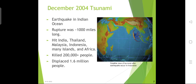Due to the Indian Ocean, energy was transferred laterally through the Indian Ocean to the lands of the south Indian region, and it also reached South America. It hit India, Thailand, Malaysia, Indonesia, many islands, and Africa. The rupture was approximately 1000 miles long. It killed approximately 2 lakh people and displaced 1.6 million people.